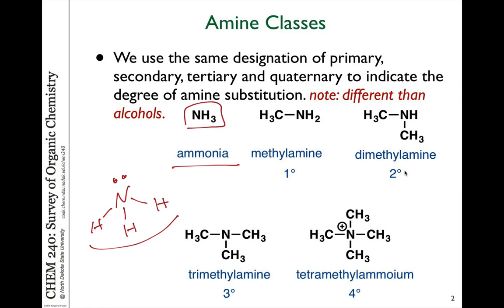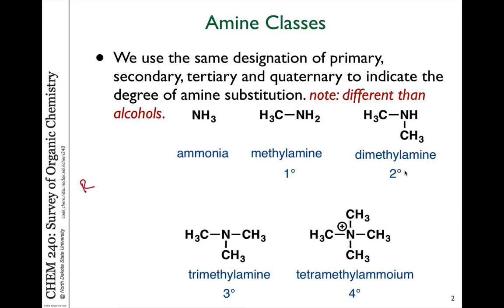Unlike alcohols, where we talk about the type of substitution on the carbon the alcohol is attached to — for example, a primary alcohol is attached to a primary carbon, a secondary alcohol to a secondary carbon, and so on — when we talk about classifying amines with regards to substitution, we're actually talking about the degree of alkyl substitution on the nitrogen itself.